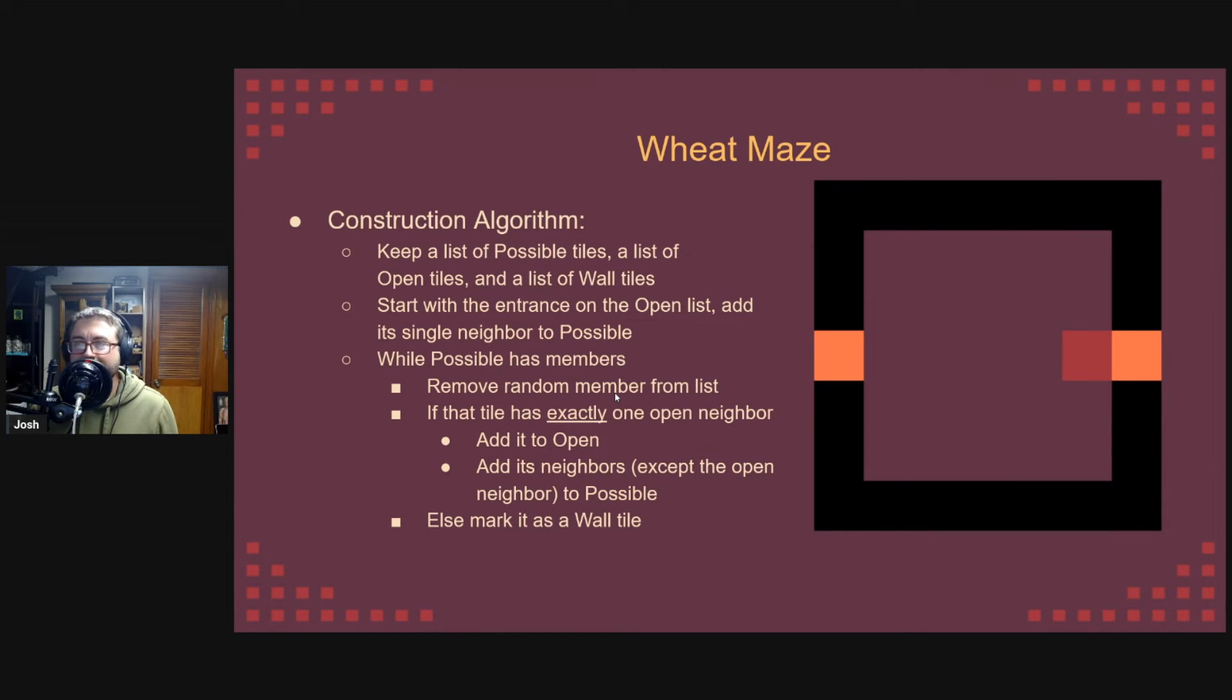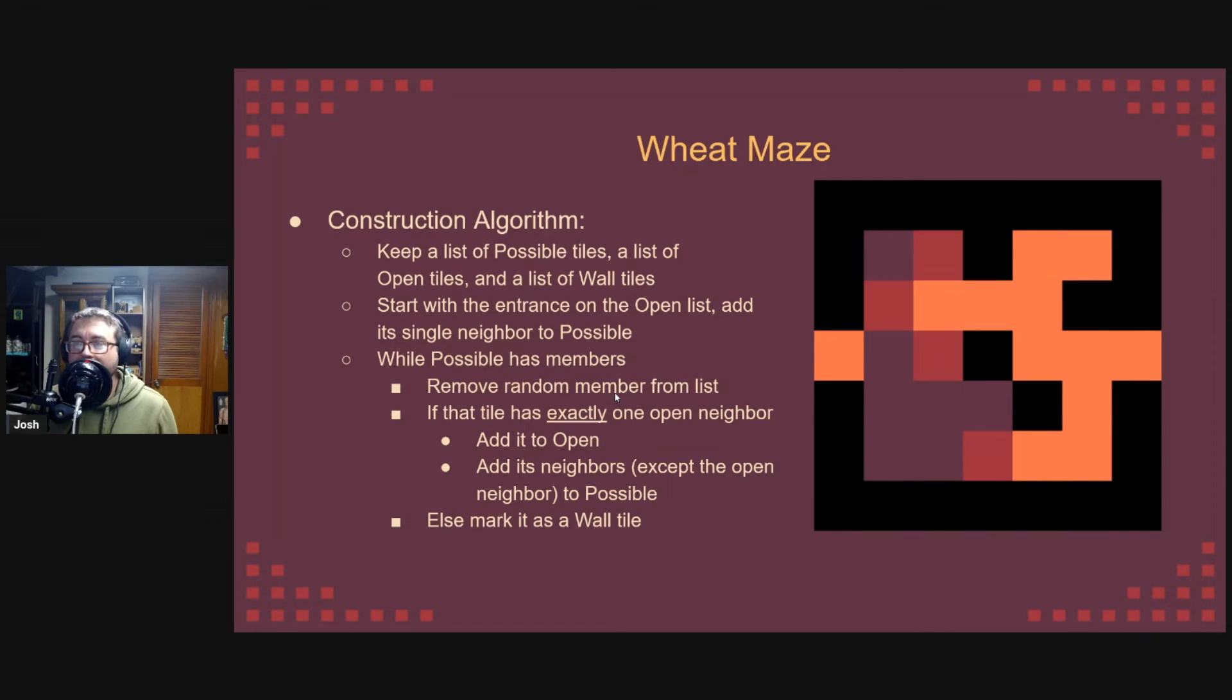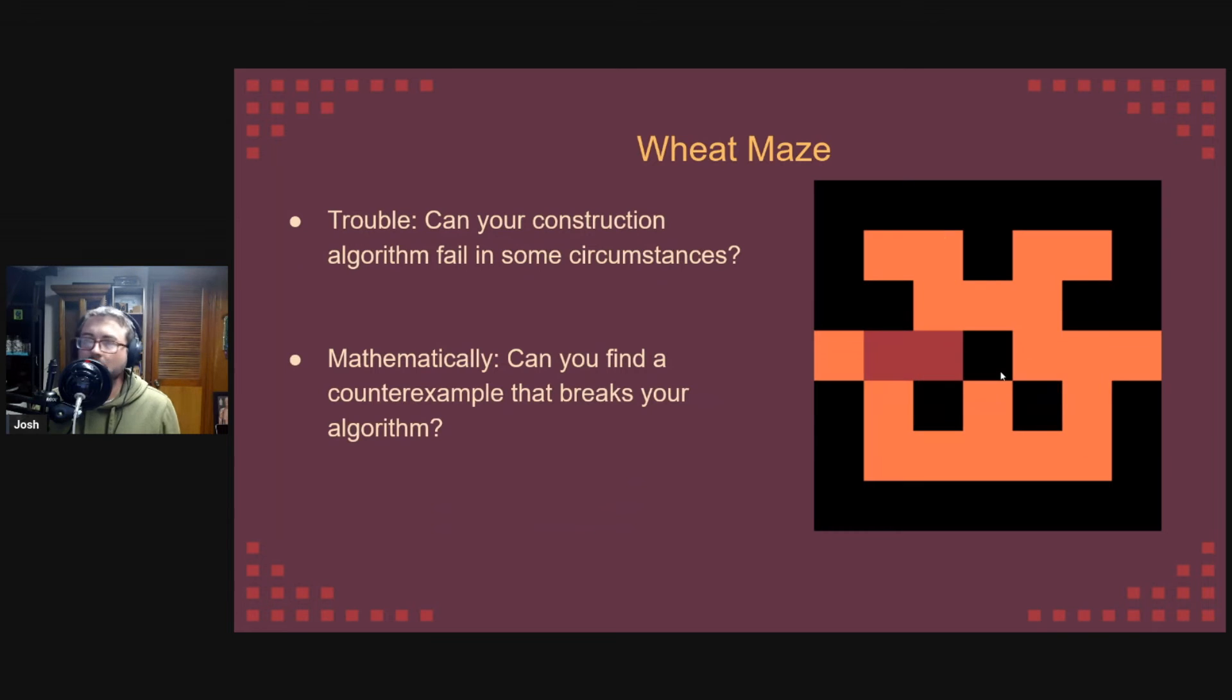I say usually because there's a set of circumstances where this algorithm can fail. In fact, it narrowly avoids it doing so right at the end here. Blink and you missed that. Let's see that in slow motion. At the end of maze generation, there are two possibly open tiles left. If the algorithm randomly picks this one on the right instead of the one on the left, the one on the left gets marked as a wall. Now the maze has no solution and the player is sad.